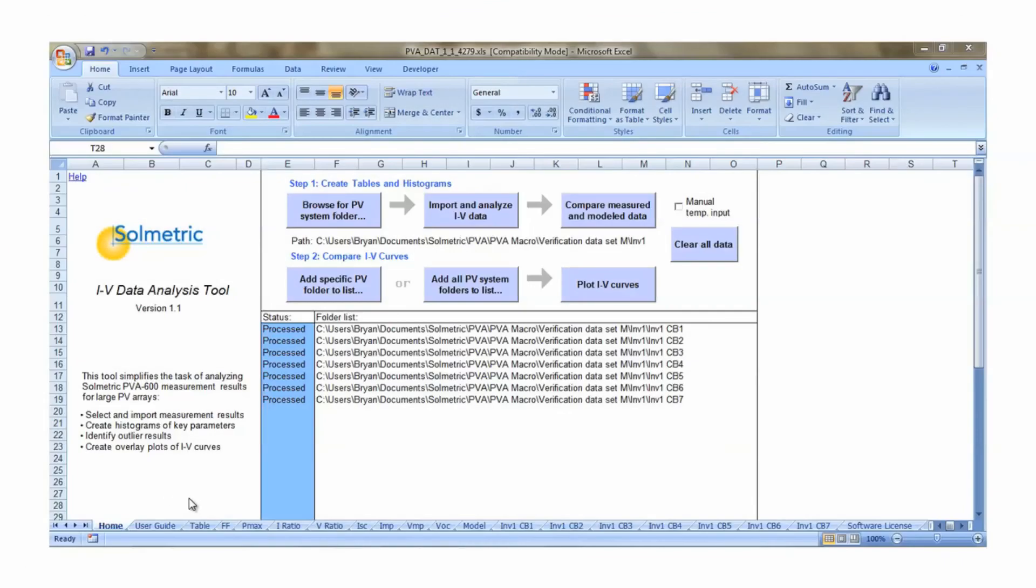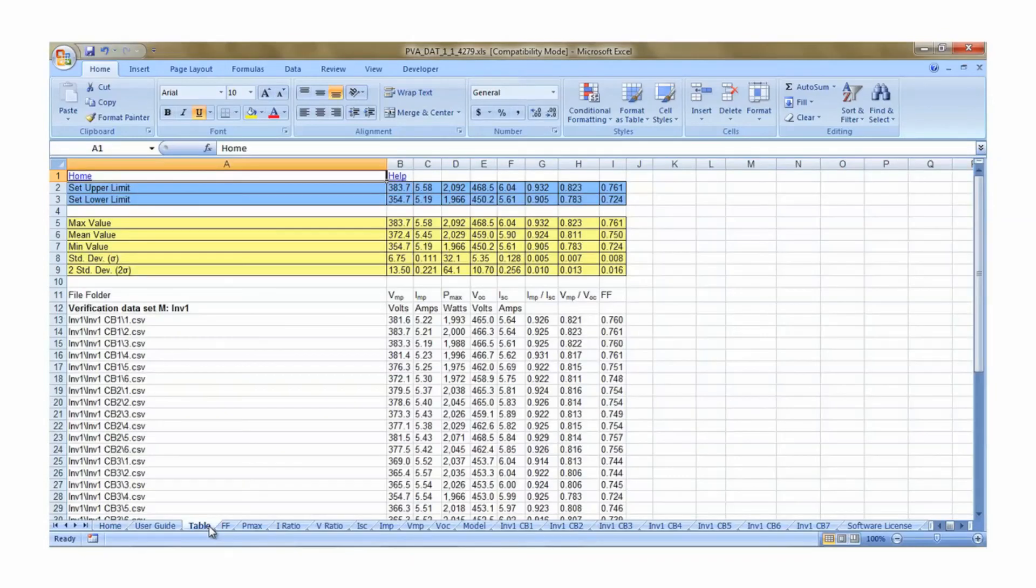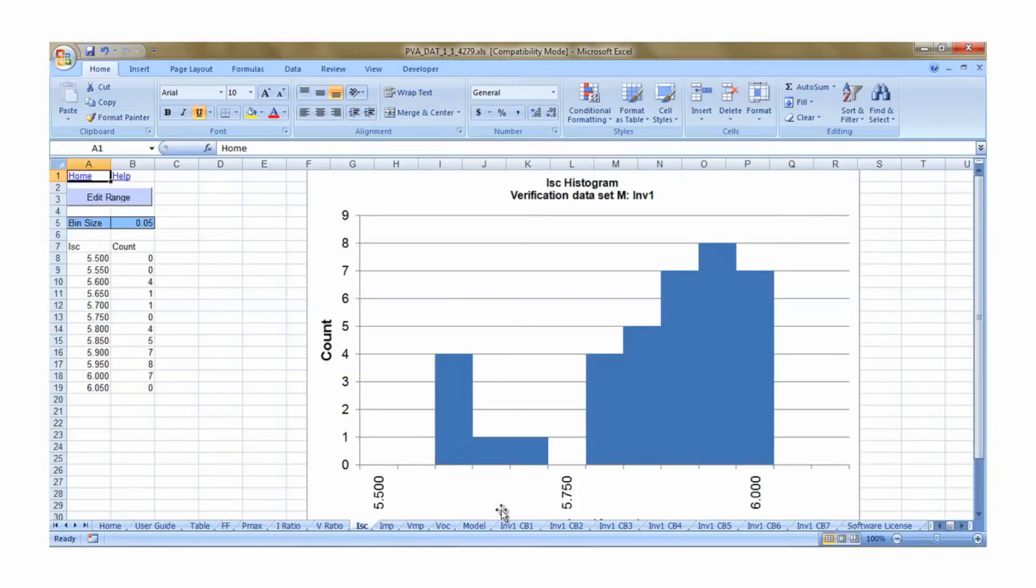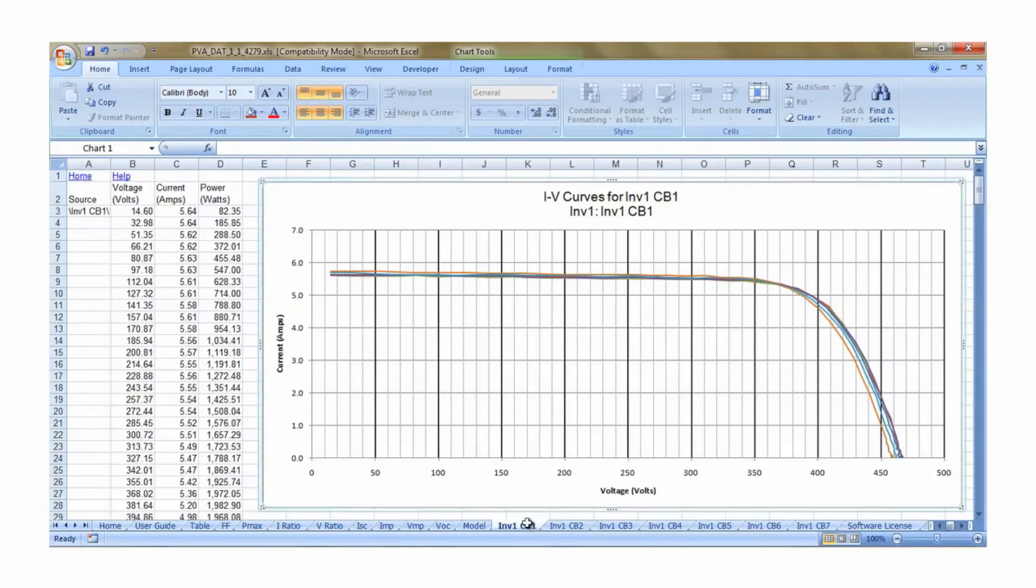The IV Data Analysis Tool provides a convenient method of analyzing PV Analyzer data. The tool imports the data from all the saved traces from a site visit and generates tables, charts, histograms, and IV plots that can be used for client reports and to identify problem strings. The IV Data Analysis Tool will be covered in greater detail in a future video.